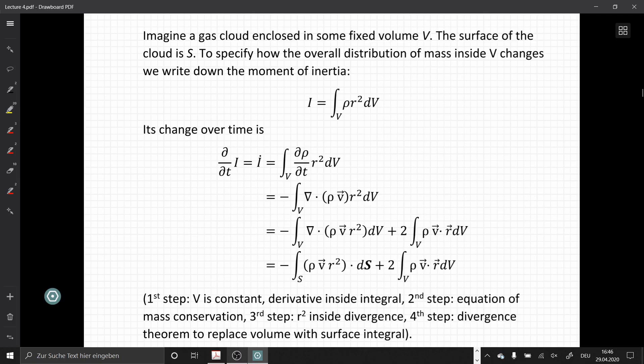Now let's imagine that we have a gas cloud that is enclosed in some fixed volume V. The surface of this cloud is S and one way to specify how the overall distribution of mass inside the volume changes is by writing down the moment of inertia, which is the volume element of rho times R squared.